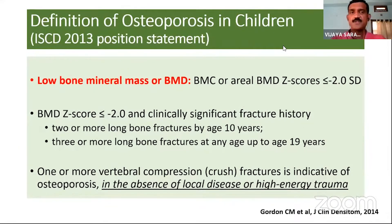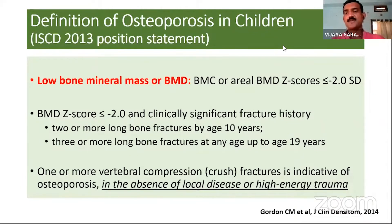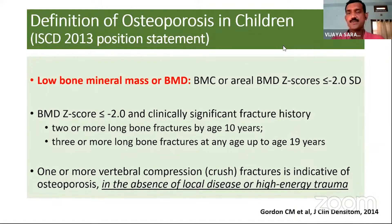To start with the definition of osteoporosis: we don't use the words osteopenia and osteoporosis unless certain criteria are met in children, unlike adults. In adults, especially for post-menopausal women and men more than 50 years, we use T-score, but in children it has to be Z-score. We define low bone mineral mass or BMD when the Z-score is less than or equal to minus 2.